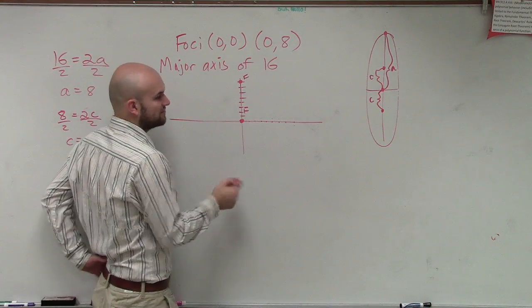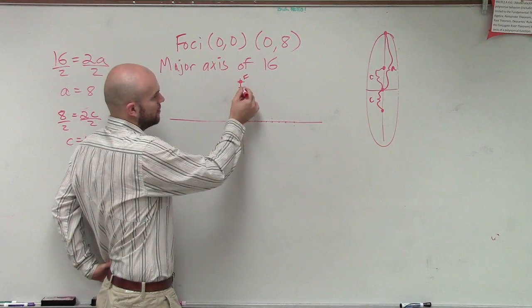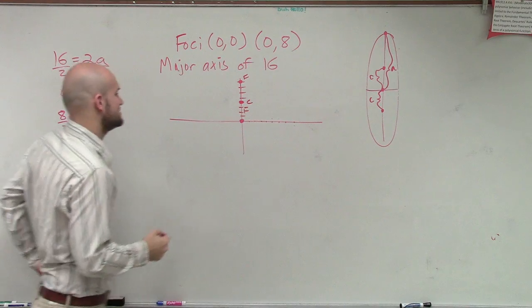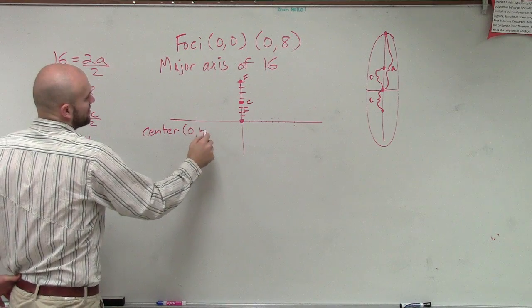So, therefore, if I know that C equals 4, all I need to do is travel 4 units from my foci to find the center. So, we can now say that the center is at (0, 4).